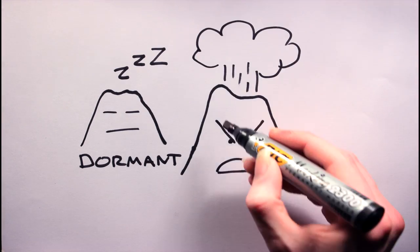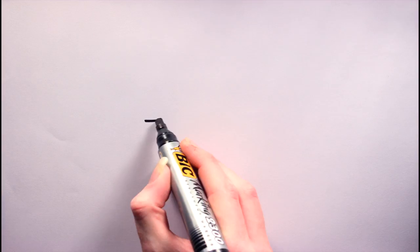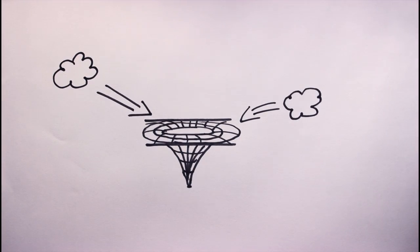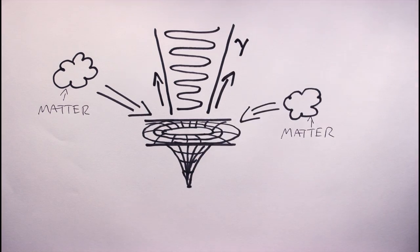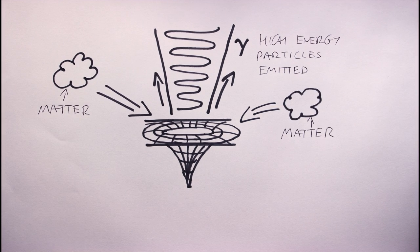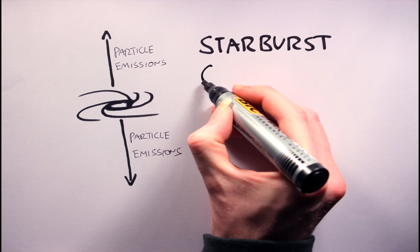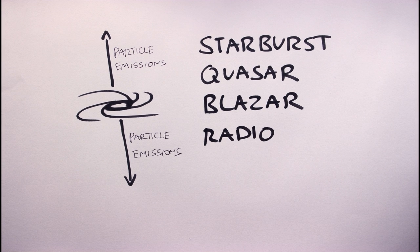A galaxy can either be said to be dormant or active. In an active galaxy, the supermassive black hole at the center regularly gobbles up material and, as a result, ejects high-energy particles into intergalactic space. Depending on the type of emission, these galaxies can be referred to as starburst, quasar, blazar, or radio galaxies, amongst others.